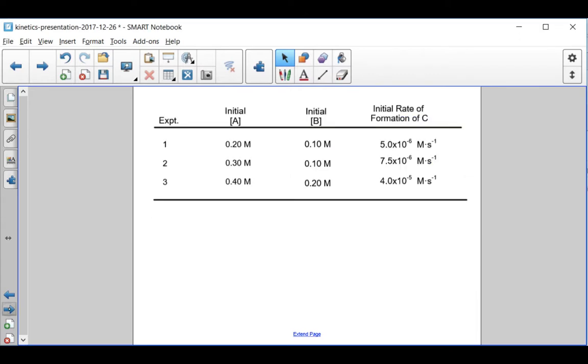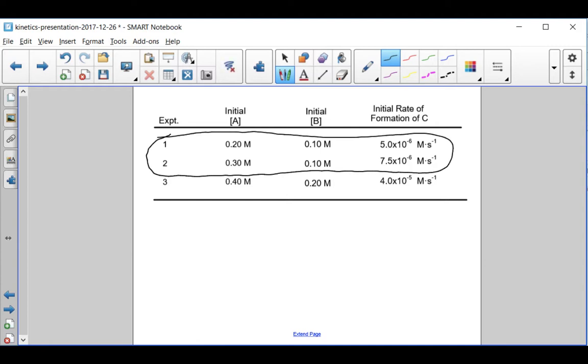I'm going to do that first by finding the reaction order with respect to A. I'm going to use experiments one and two because in this case the concentration of B is held constant. So I can just find the ratio of the rates to the concentration of A and find the reaction order with respect to A.